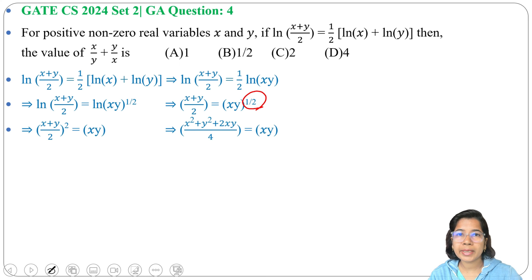We know the (a+b)^2 formula: a^2 + b^2 + 2ab. So this becomes (x^2 + y^2 + 2xy)/4 = xy.